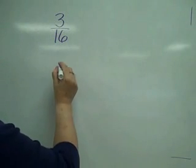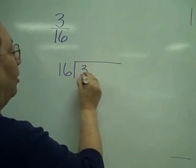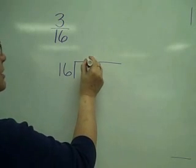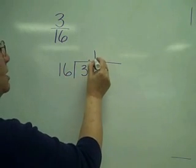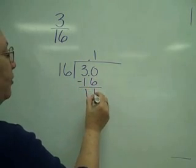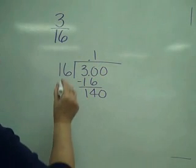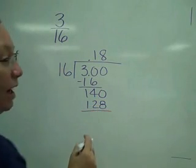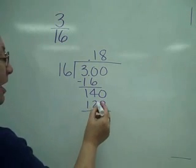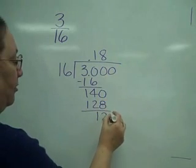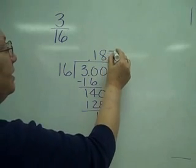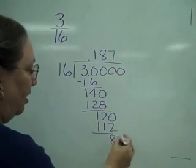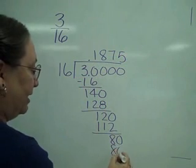Another example: 3 sixteenths. I'm going to take 16 into the 3 — bottom into the top, or denominator into the numerator. I'll add a decimal and a zero. 16 goes into 30 one time — 16. Subtracting, I get 14. Bring down the other zero. 16 goes into 140 eight times for 128. Subtracting, I get 12. Bring down another zero. 12 into 120 goes seven times for 112. Don't be afraid to use scratch paper if you need to. One more zero, and it ends because 5 times 16 is 80.